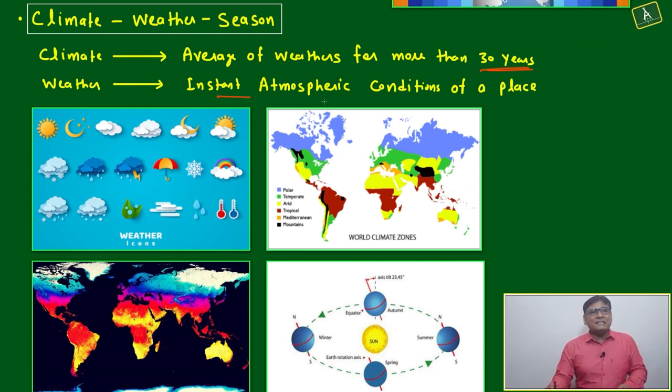Weather is the instant atmospheric condition of a place. Maybe your country is in a polar region, but at a particular point in time it may be raining heavily. This is an instant atmospheric condition of a place - that is called weather.